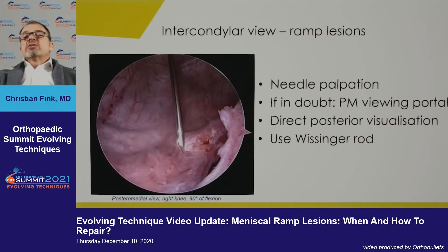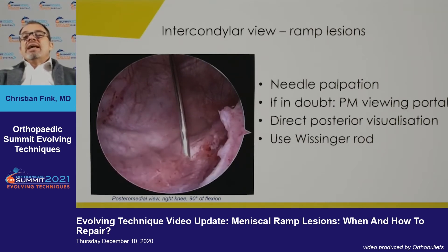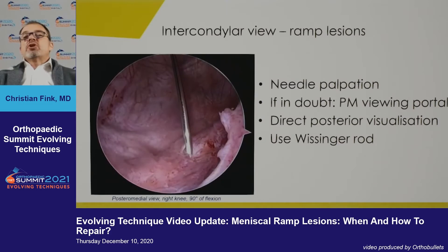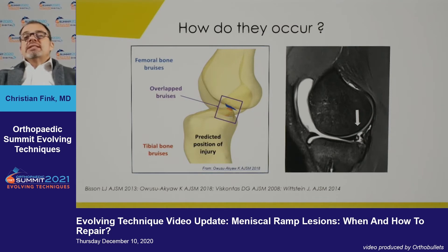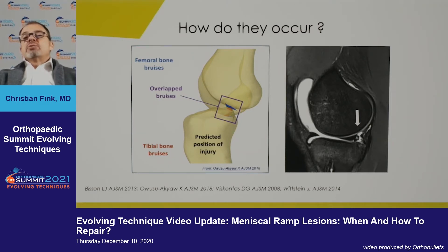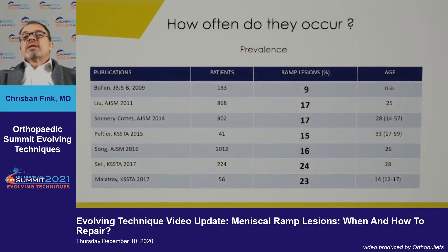When you intend to suture this, the needle is important for palpation, and if you are in doubt, place a posterior medial incision and put the scope in posterior medially to fully inspect the ramp lesion. These tears occur most of the time in combination with ACL reconstruction, caused by subluxation. We can usually see bone edema on the posterior aspect of the tibia, and the semimembranosus probably also plays a role. The prevalence is around 20% depending on the patient population.